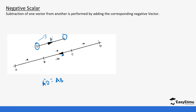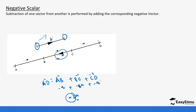So AD equals AB plus BC plus CD. AB will be negative a, BC will be negative 3a, and CD will be negative a. This is the same as negative 3a. So you see there is a negative scalar multiplying a certain vector — it shows an opposite direction to the positive vector, going against the direction we are supposed to form.